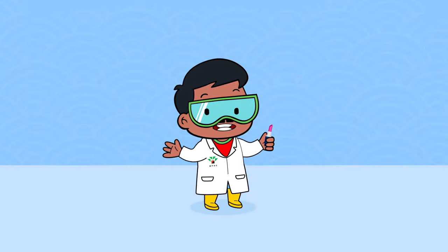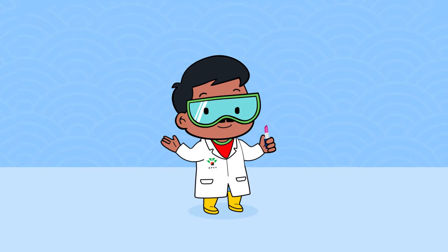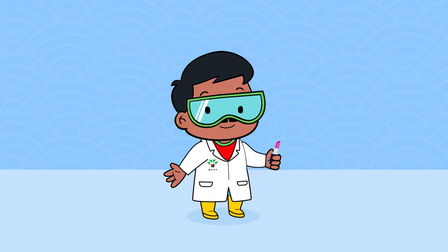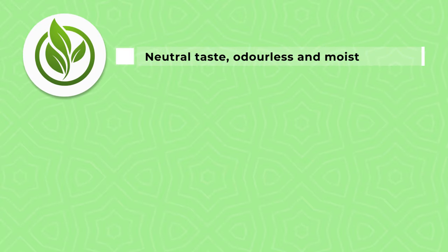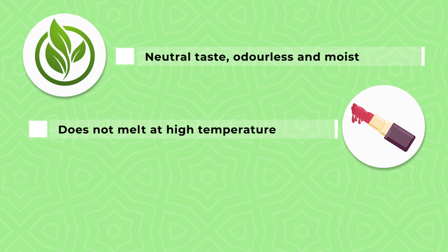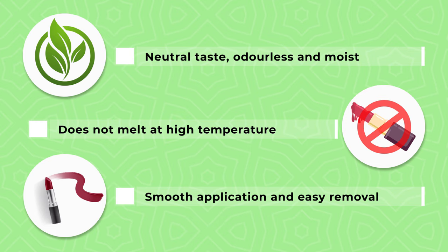When palm-based oleochemicals are added in lipstick formulation, it helps in holding the color of the lipstick. Palm-based oleochemicals also have a neutral taste and are odorless, and give moisture to the lips. The lipstick does not melt at high temperatures, and they offer smooth application and easy removal.